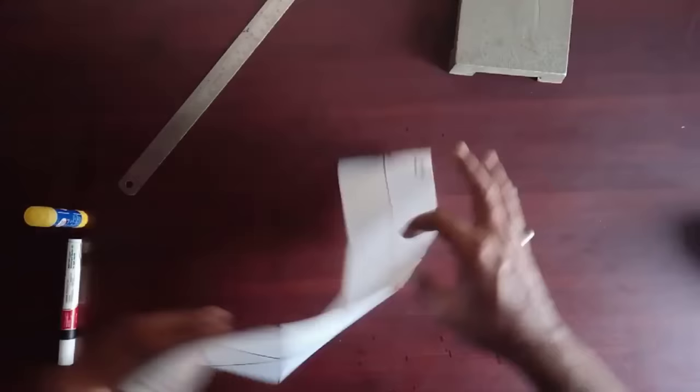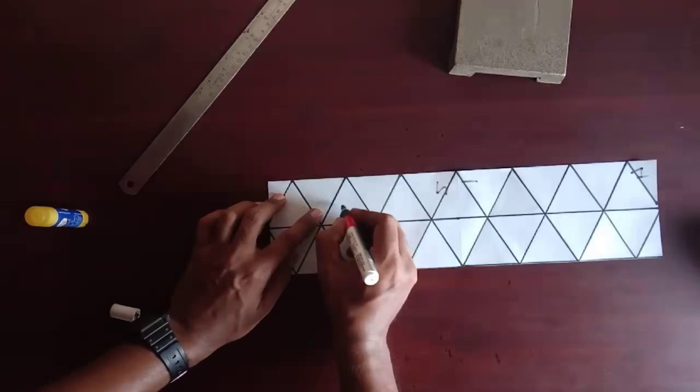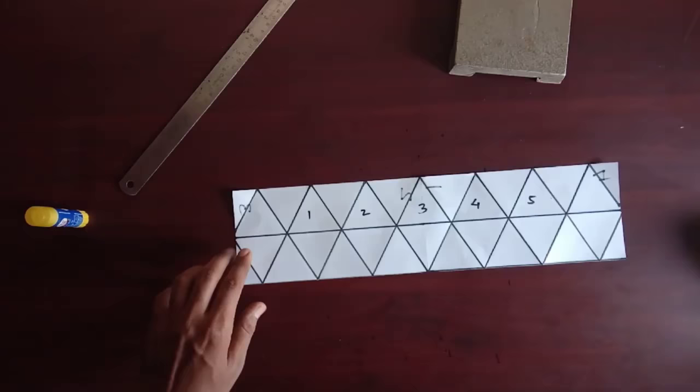Now fold up this strip. In the upper row we need 5 full triangles pointing upward. Mark them as 1, 2, 3, 4 and 5.